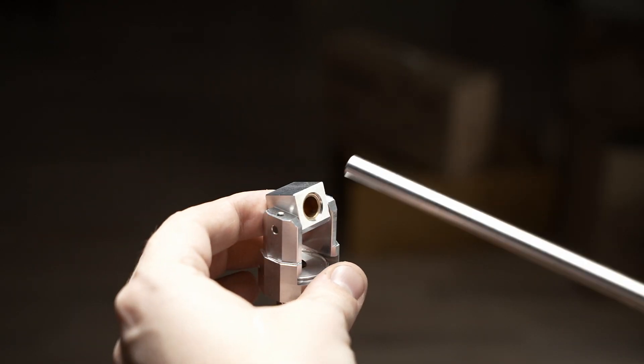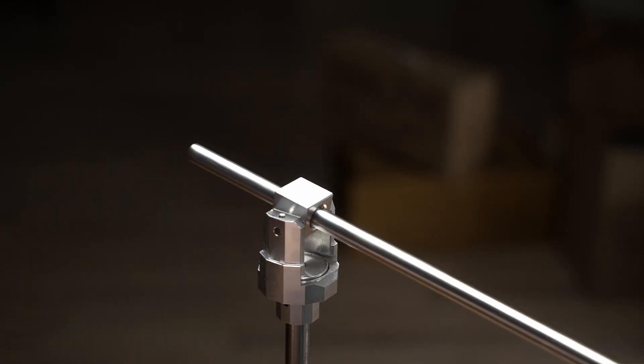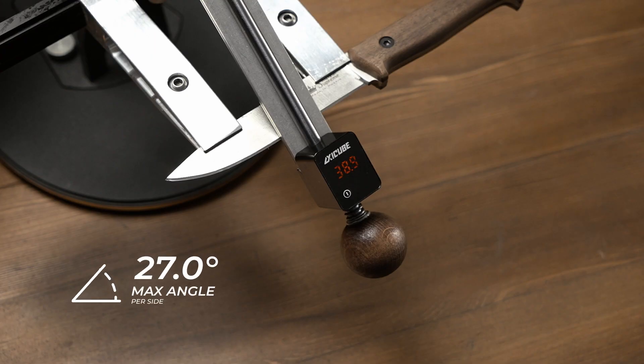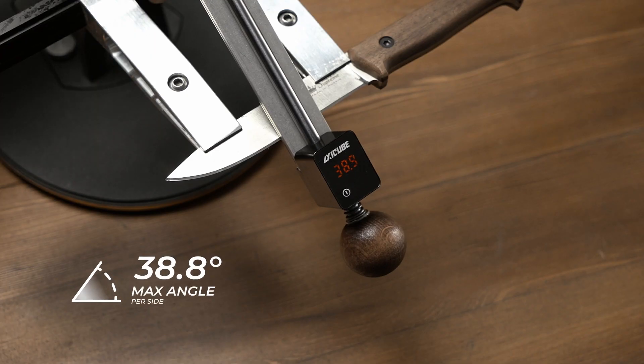If we turn over the hinge joint and set the rod into it in this position, the angle range increases up to 38.8 degrees per side.